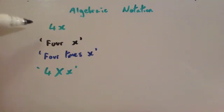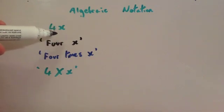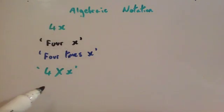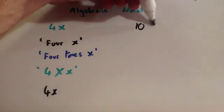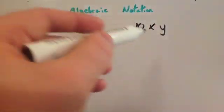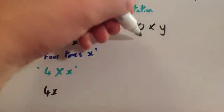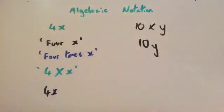This time I've written 4x. So 4 and an x directly beside each other. In algebra, that actually stands for 4x, or 4 times x. It means 4 times whatever x is. Another way of writing it is 4 times x, but in algebra you don't write the multiplication sign, so it is just 4x.